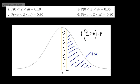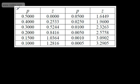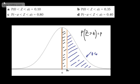Let's go to our table. Here's 0.4 — 0.4 is just there. We can say this is 0.2533. So we've got now A = 0.2533.